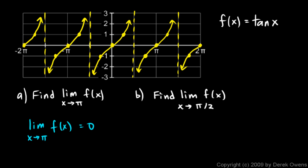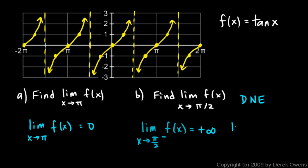As x approaches pi over 2, it's a little different. The limit as x approaches pi over 2 does not exist — the function grows without bound, positively on one side and negatively on the other. But we can use limit notation to describe the behavior: the limit as x approaches pi over 2 from the left of f of x is positive infinity, and the limit as x approaches pi over 2 from the right is negative infinity.